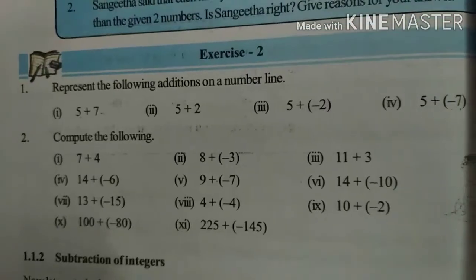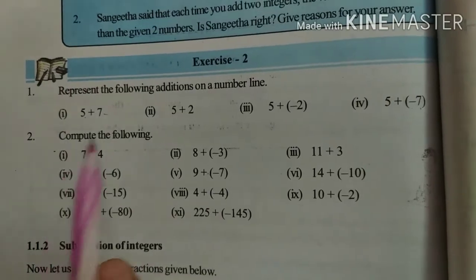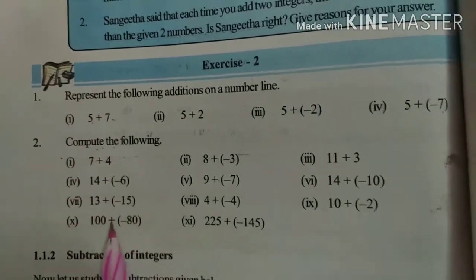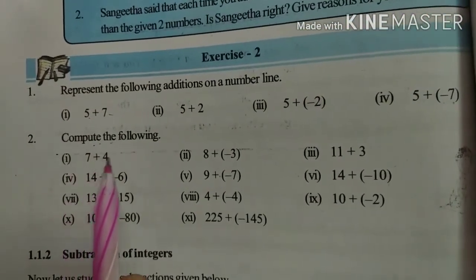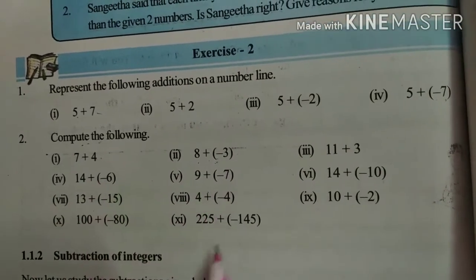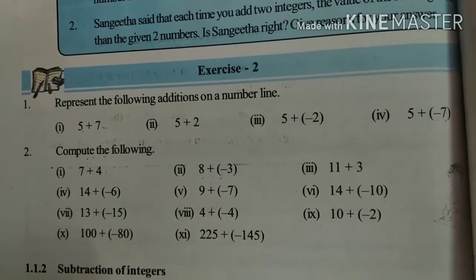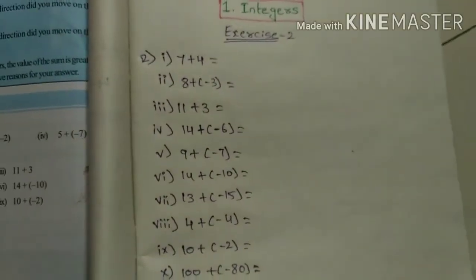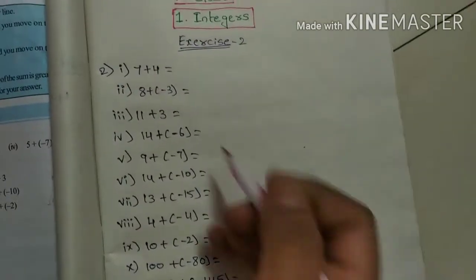Exercise 2, second problem: compute the following. First one, 7 plus 4. Second one, 8 plus minus 3. So totally 11 problems given. I'm doing it here.